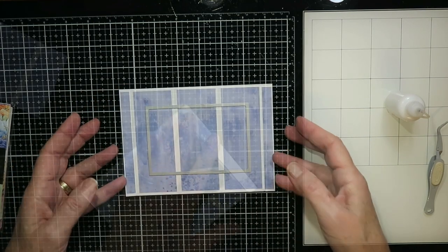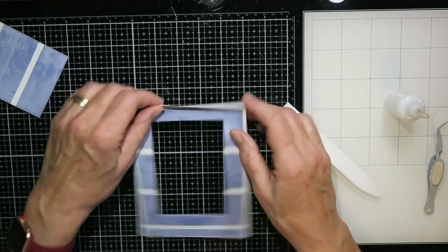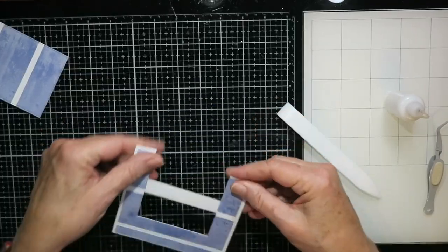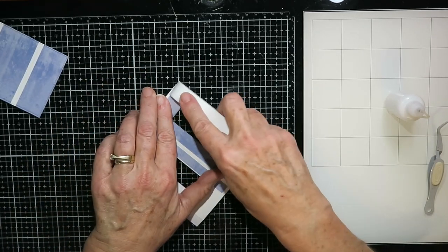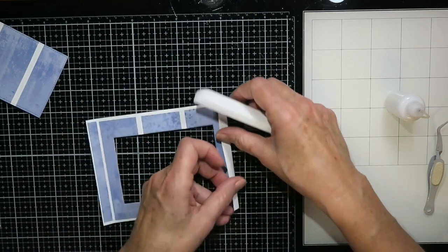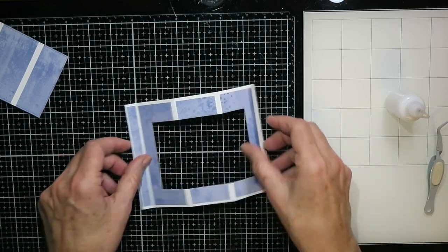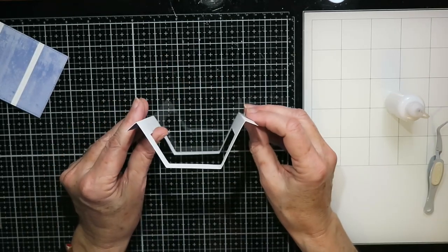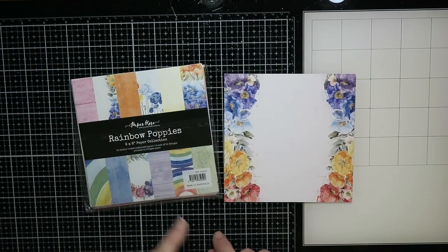So I'm using that rectangle die. That one is from the Paper Rose collection of stitched rectangles. It ends up being four and three quarter inches wide by three and a quarter inches tall. Just whatever you have in your stash that would make that window, and it does not have to be a rectangle. It could be a circle. You can see there I did two valley folds at the ends and two mountain folds in the middle, and that will give you that shape.